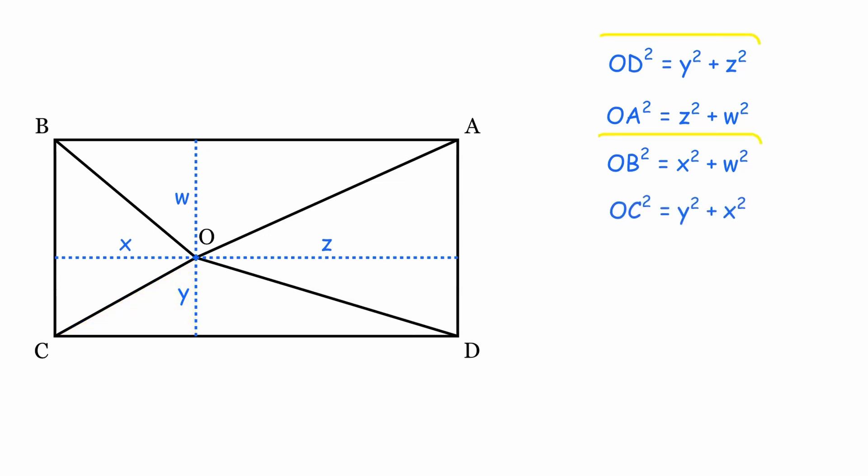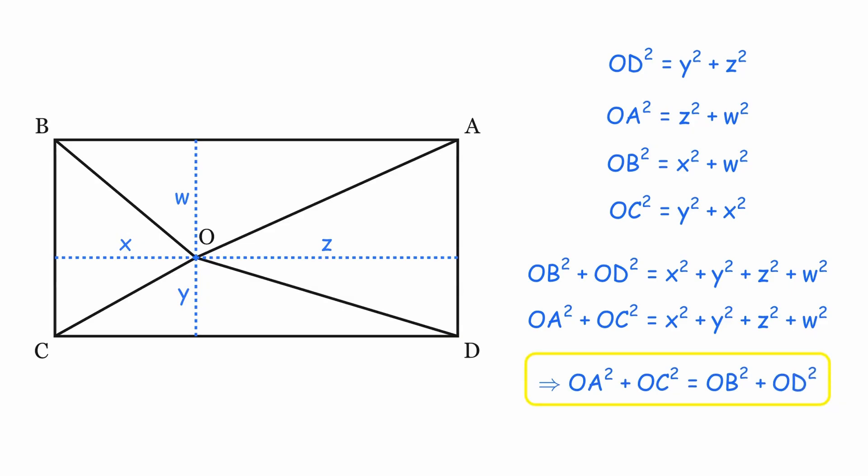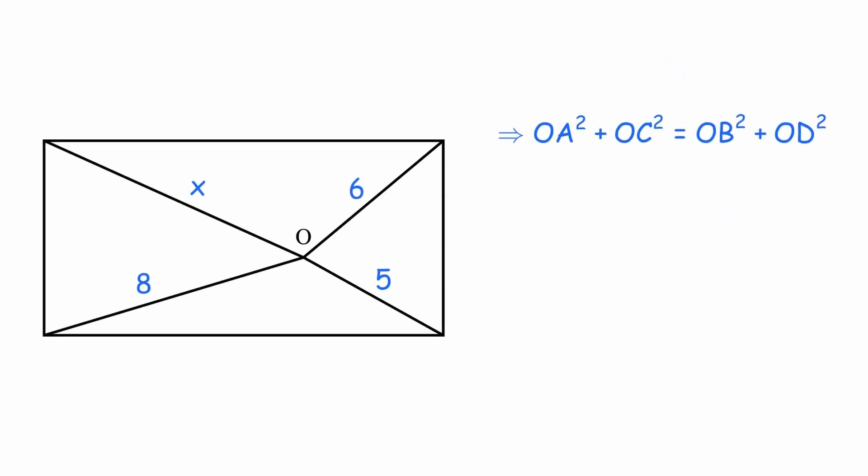If you look carefully, we can add OB squared plus OD squared to get W squared plus X squared plus Y squared plus Z squared. Same can be done for OA squared plus OC squared. This means that OB squared plus OD squared equals OA squared plus OC squared. This relation is going to help us solve the problem.